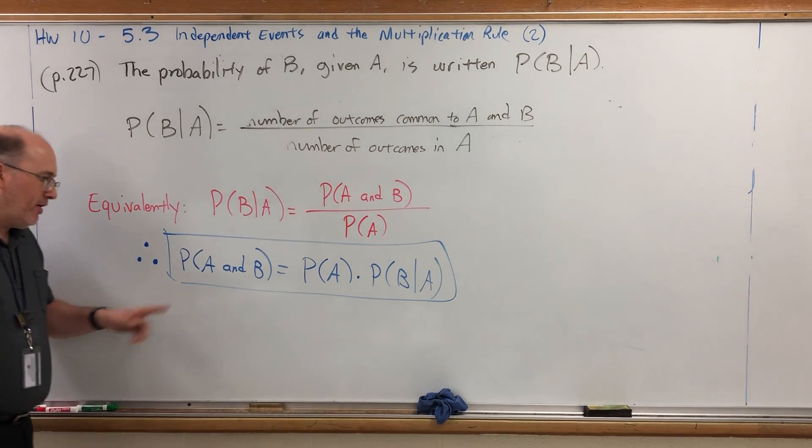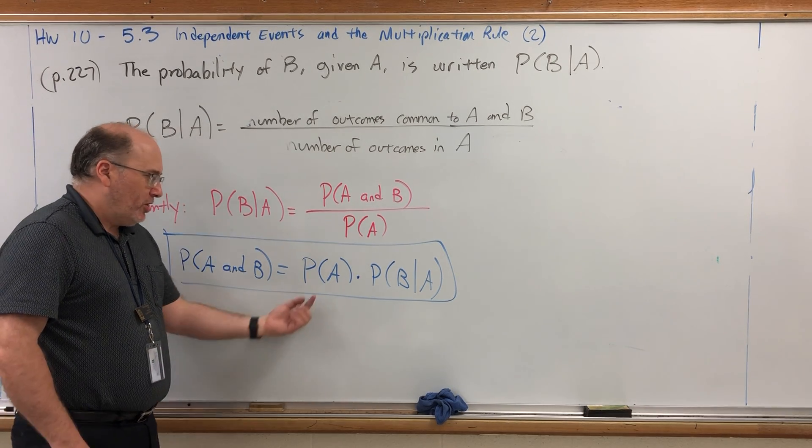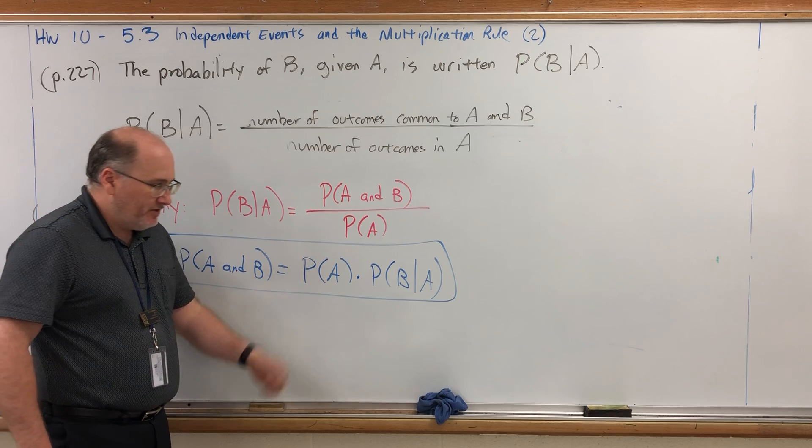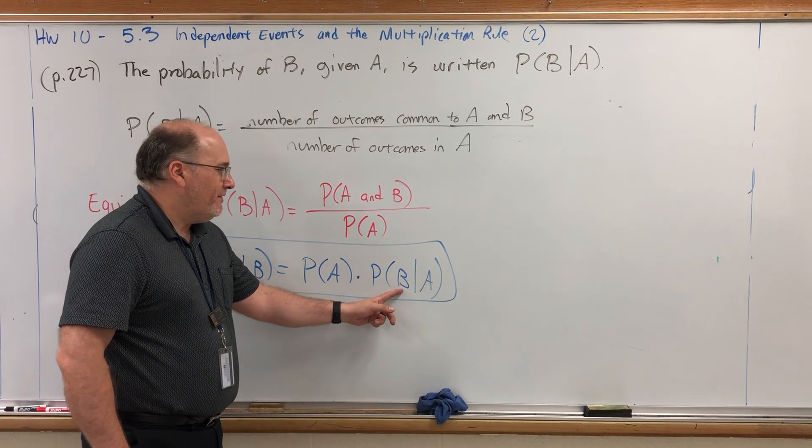It says if you want to find the probability of A and B occurring simultaneously, you start with the probability of the first event. Then you multiply it by the probability of the second event, given that the first event has already occurred.